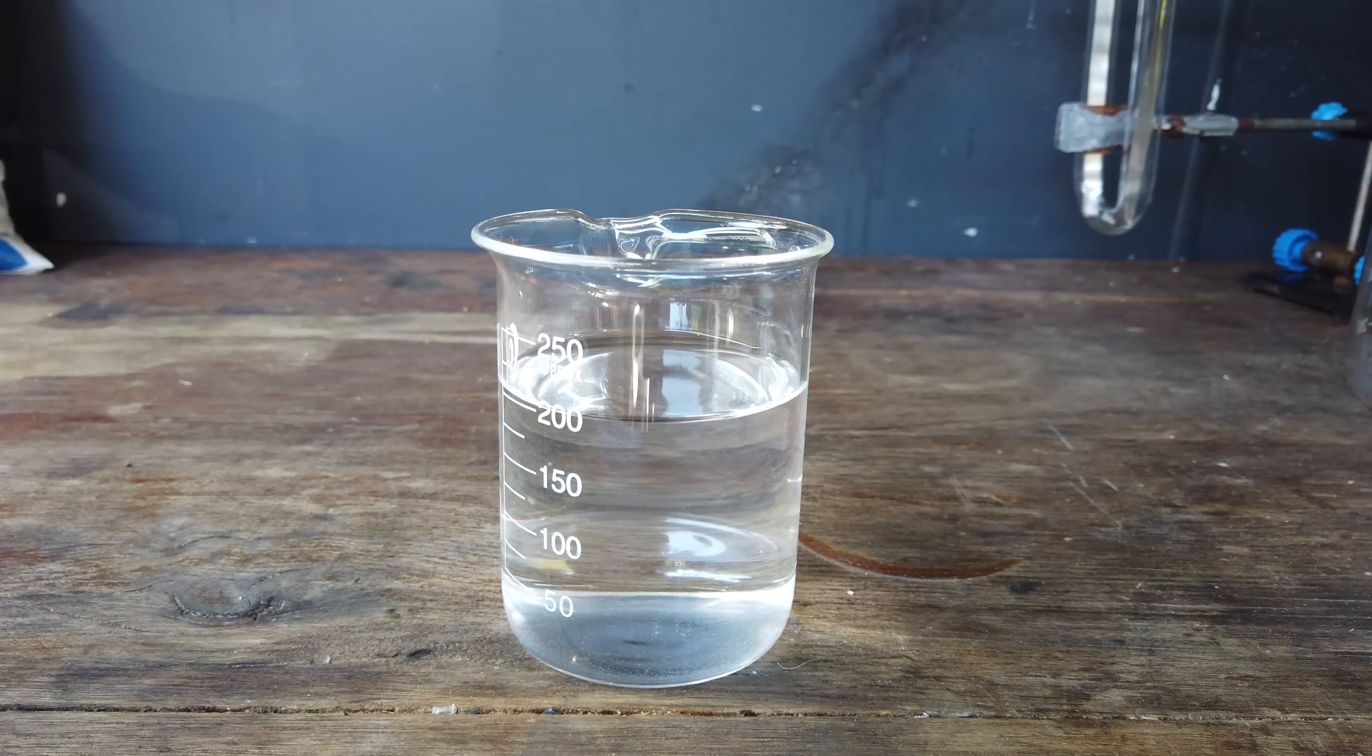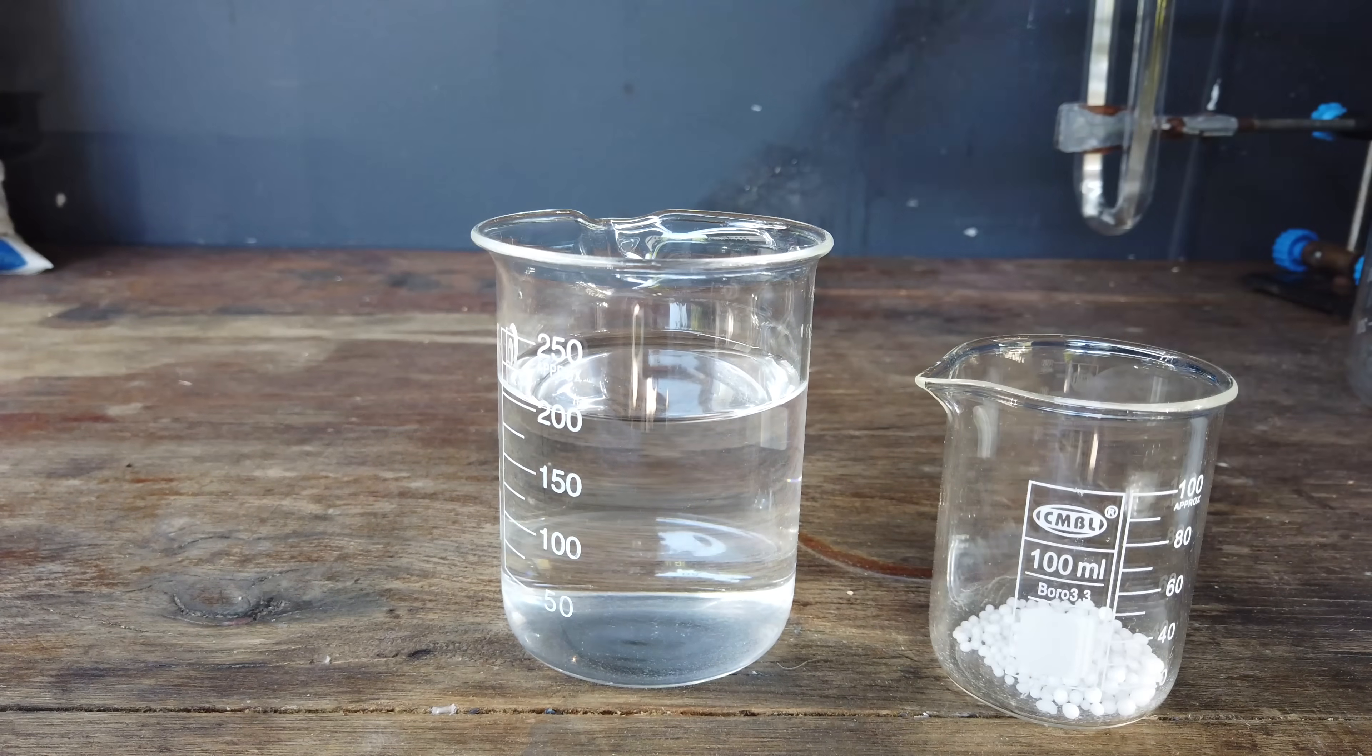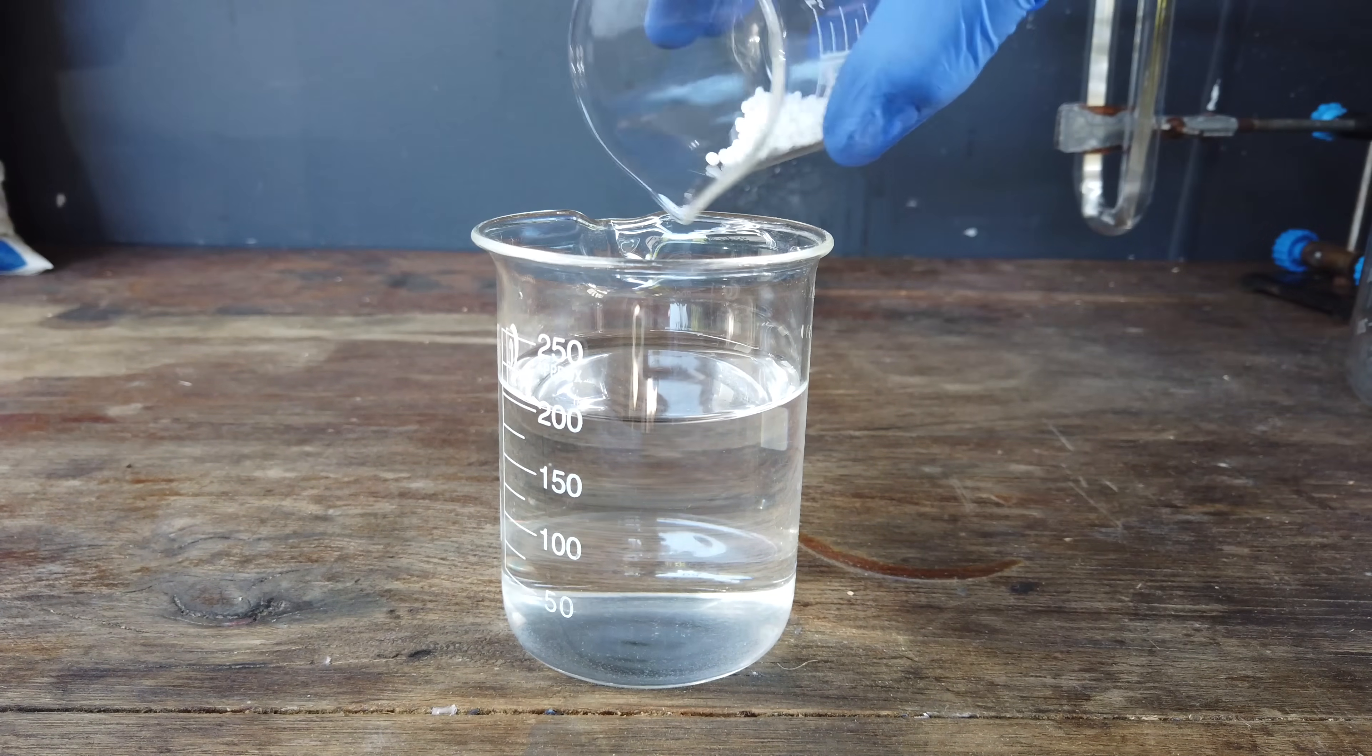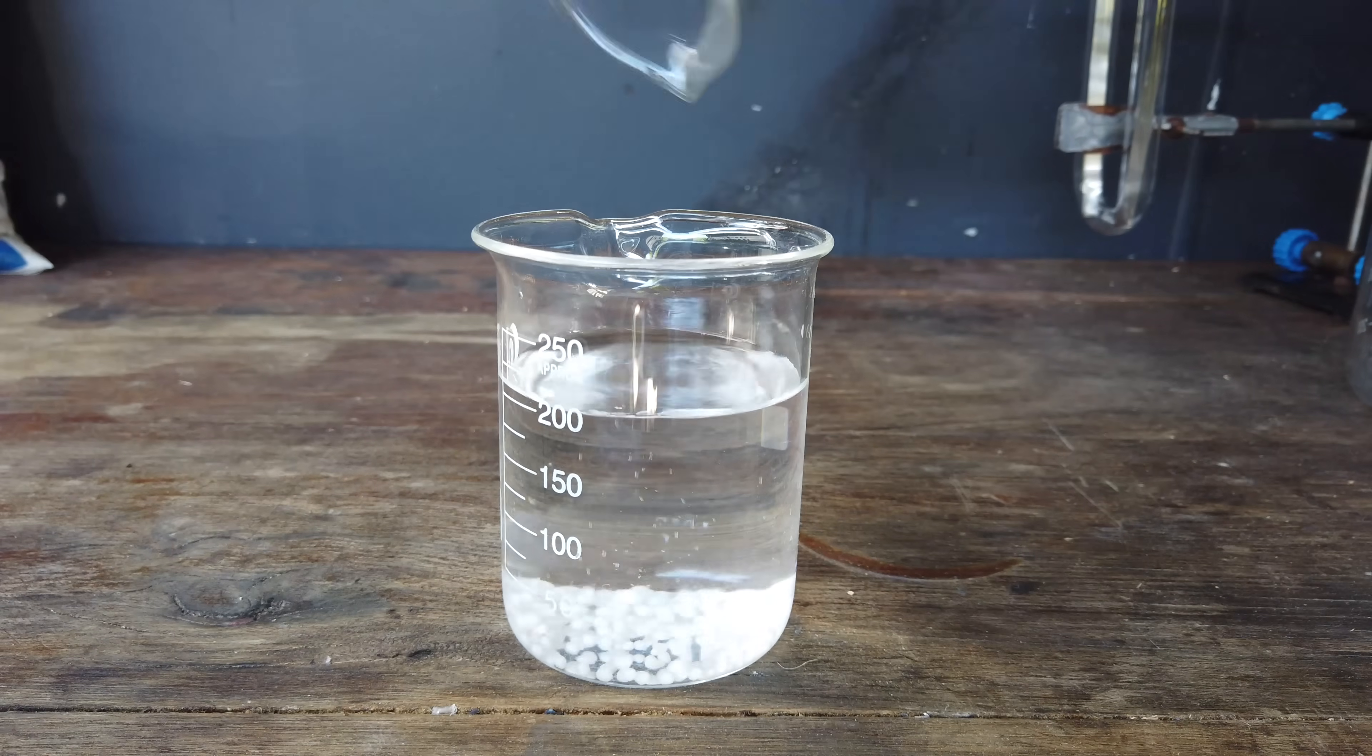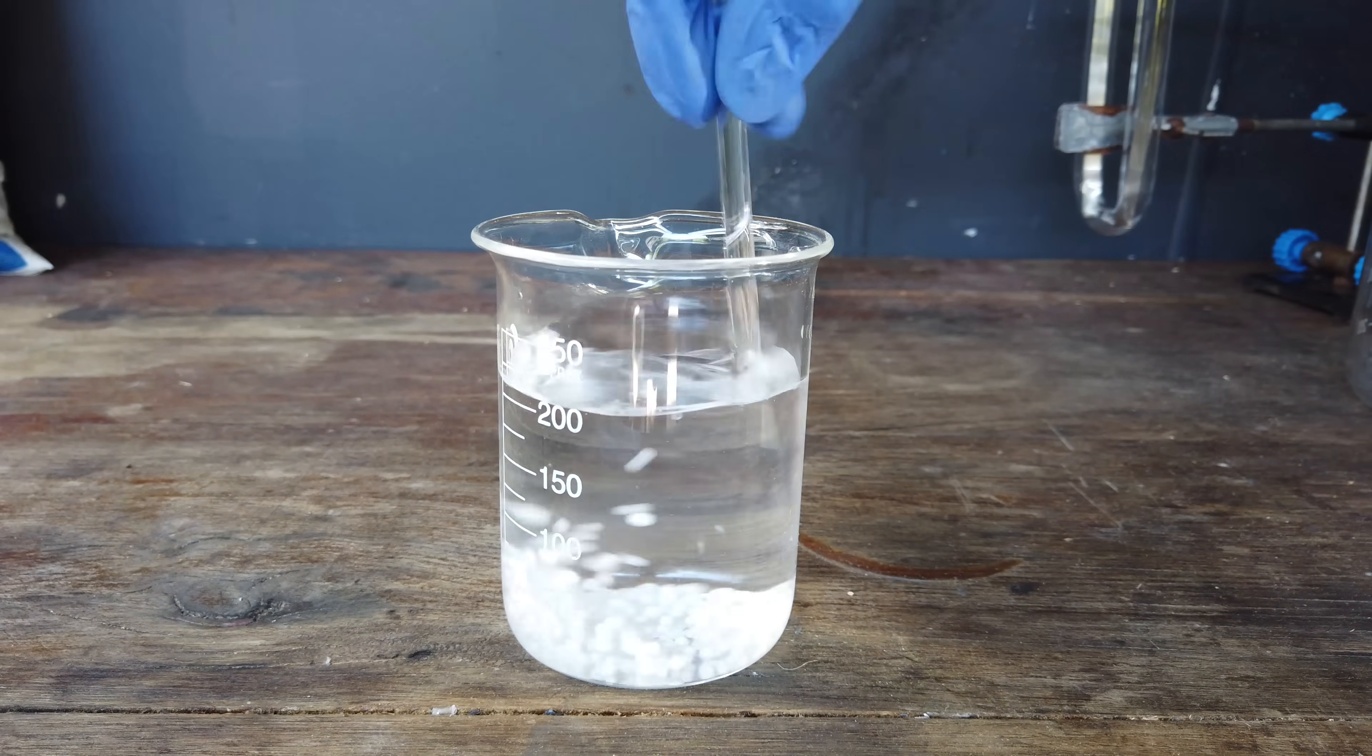To get our urea ready for electrolysis, I have four grams of urea right here and 200 milliliters of distilled water. All we need to do is just dissolve that up in distilled water there. That might take a little while to dissolve.